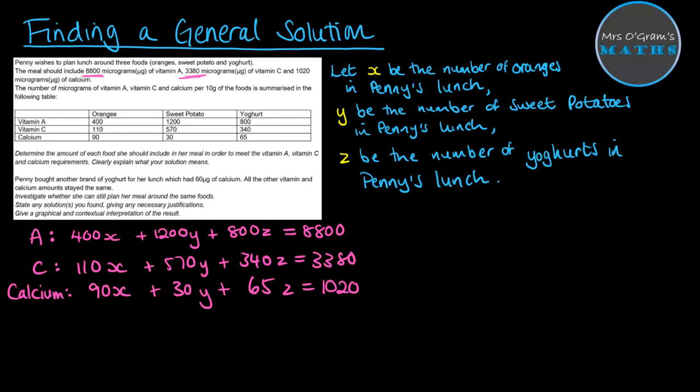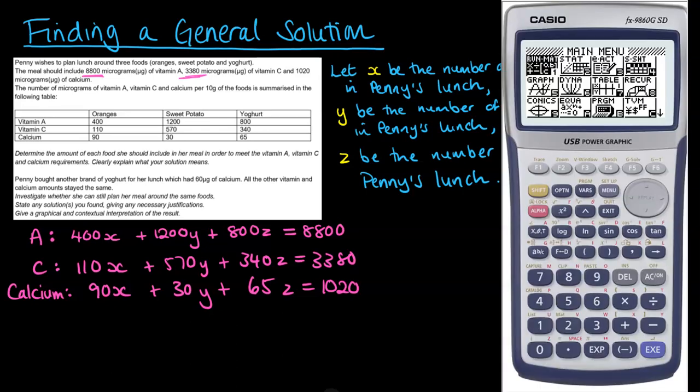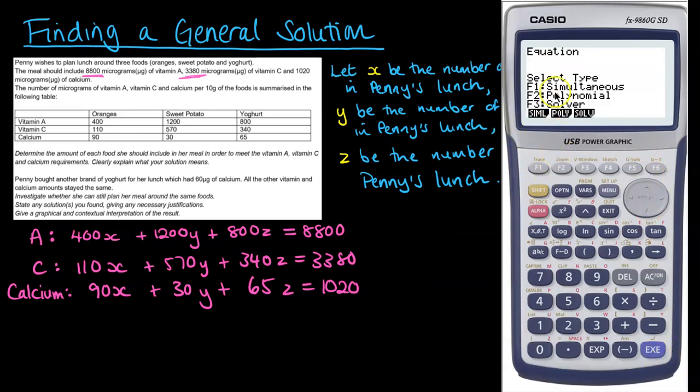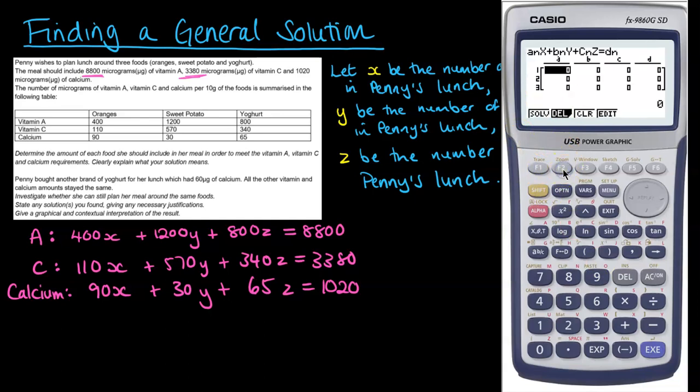We'll go over to the graphics calculator and input those values into our equation solver. We're doing simultaneous equations, we've got three unknowns, and then we put those coefficients in. I've paused the video, I've put all of the answers in there, and now we are going to solve that. We get x is 10, y is 4, and z is 0.